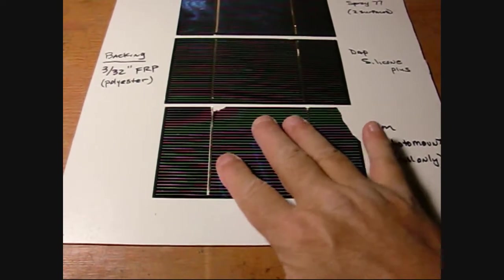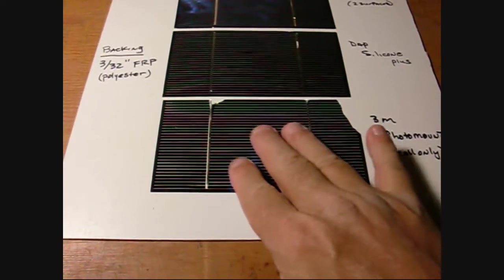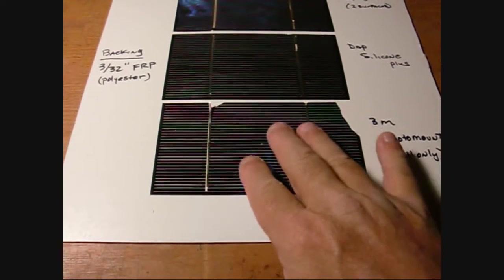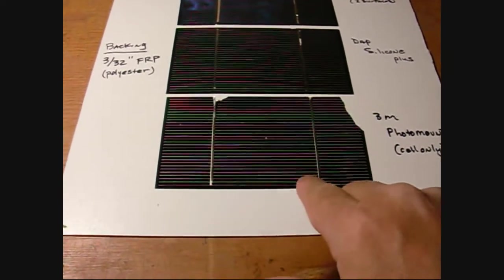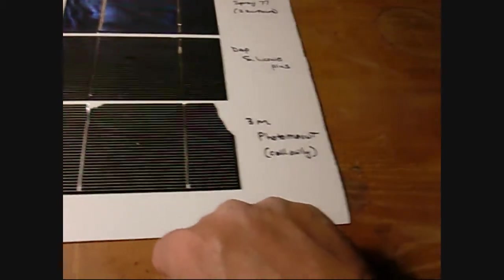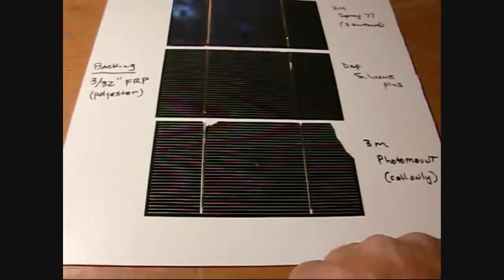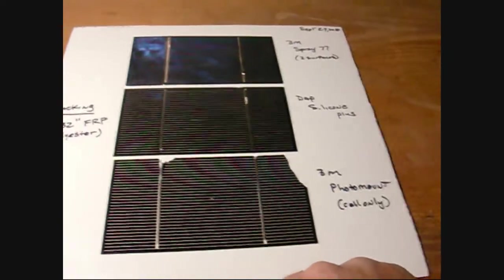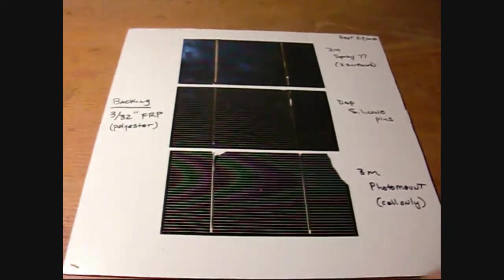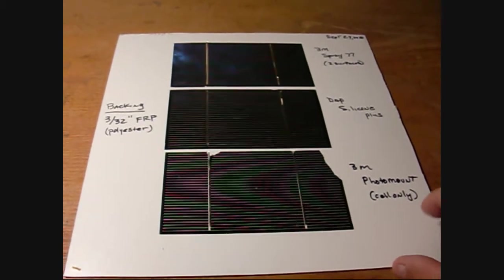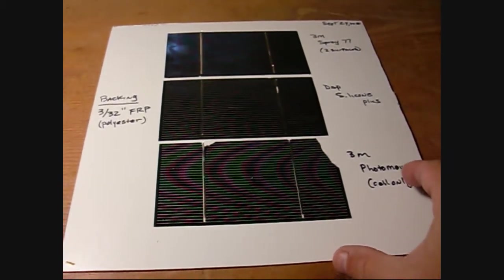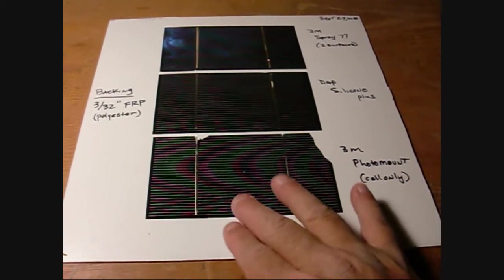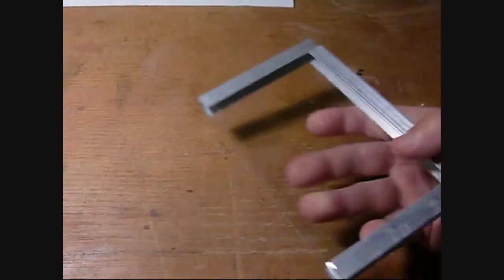It did better than the 3M, meaning it had a little bit of time where I could actually position it around, and then given maybe five minutes it was pretty much stuck where I had placed it. So that's another possibility if you're really worried about putting silicone down between your cell and some subsurface. I did leave this out in the sun for a few days and it didn't seem to make any difference.